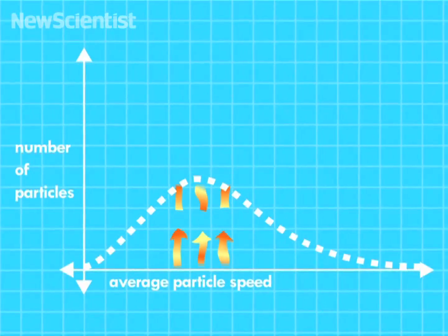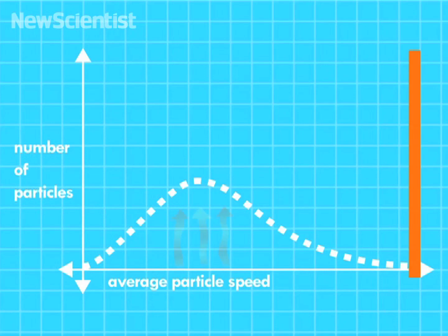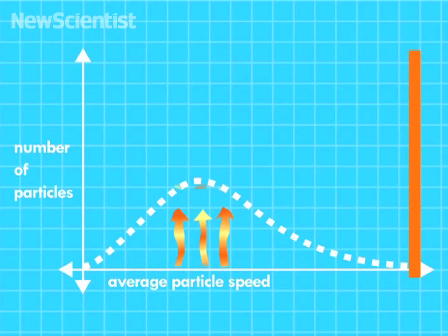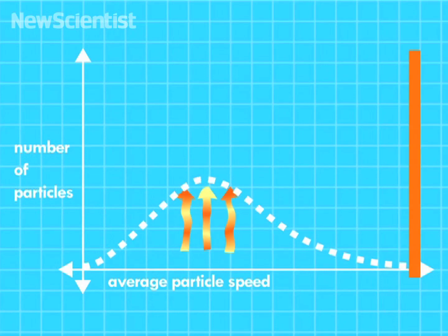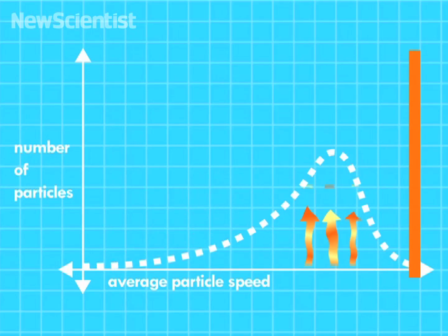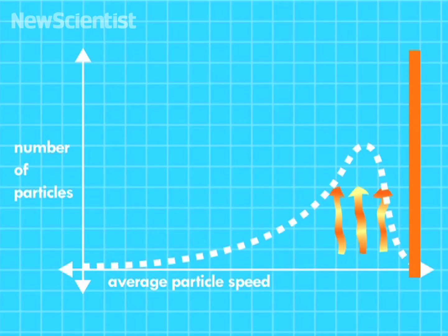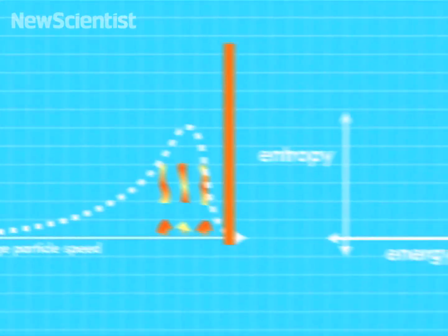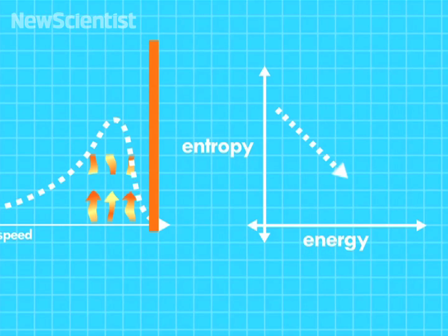But sometimes, you can cap the speed limit. And now, if you keep adding energy, you'll get more fast particles than slow, which makes the gas more ordered. And that decreases its entropy.